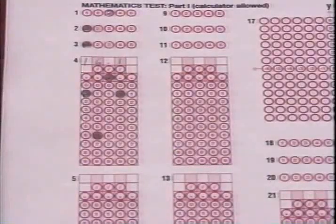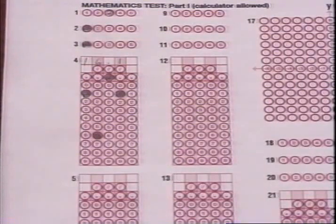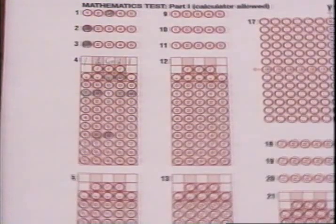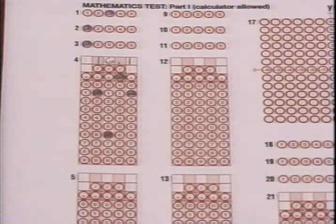In the problem we've just solved, we only needed 4 of the 5 columns provided. We filled in the first 4 columns, but we could have used the last 4 columns instead. That's because the scoring computer looks only for a correct pattern of darkened circles.